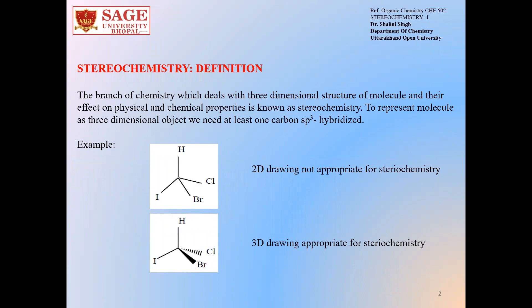What is stereochemistry? This is basically the branch of chemistry which deals with the three-dimensional structure of molecules and their effect on physical and chemical properties. To represent a molecule as a three-dimensional object, we need at least one carbon to be sp3 hybridized. This is a 2D drawing of a molecule, but this is not appropriate for stereochemistry. This is a 3D drawing which is appropriate for stereochemistry. We can see here this carbon is sp3 hybridized and we have drawn the molecular structure in three dimensions.